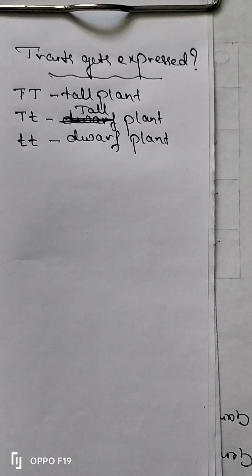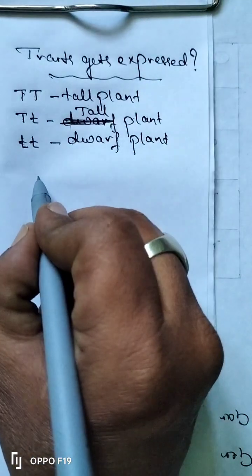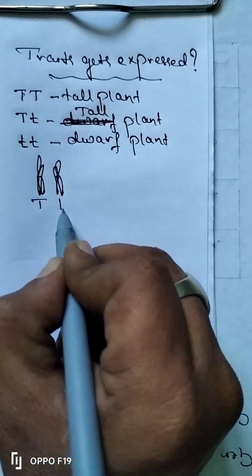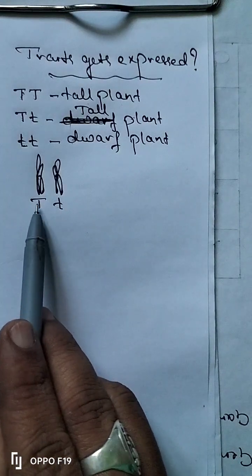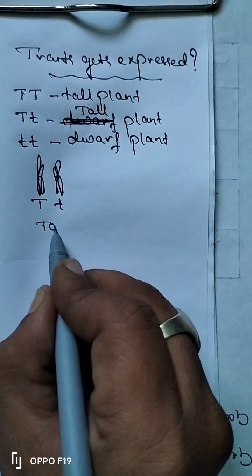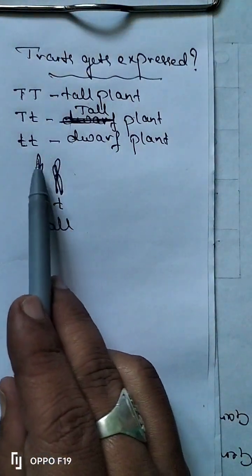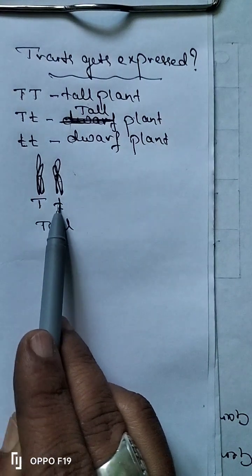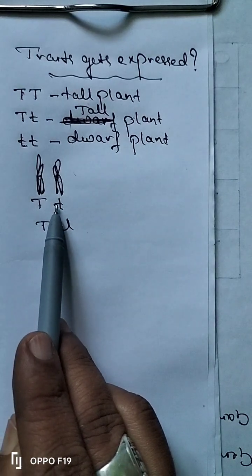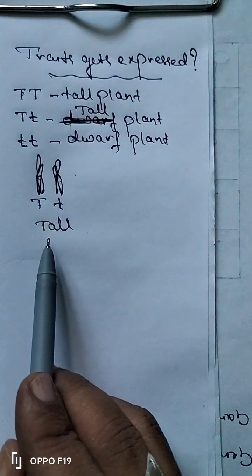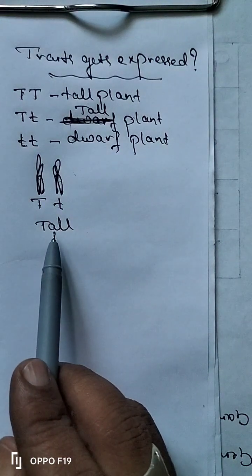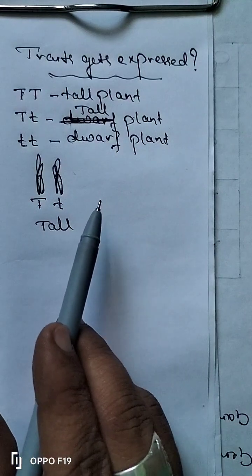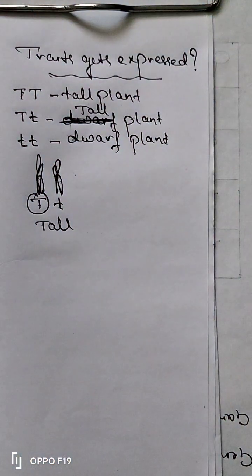For example, let us take a plant having a set of chromosomes. This plant has capital T and small t alleles. These two chromosomes are having different alleles — one is capital T, another one is small t. What will be the character? The plant grows as a tall plant, because the gene responsible for tallness is dominant.